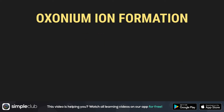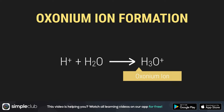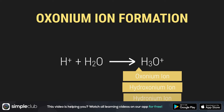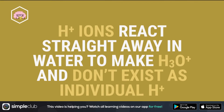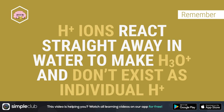You should also remember one more thing. When we have hydrogen ions in water, they react straight away with water molecules. This makes an oxonium ion, H3O-plus. You can also call that a hydroxonium ion or a hydronium ion. Just remember that H-plus ions react straight away in water to make H3O-plus and don't exist as individual H-plus.